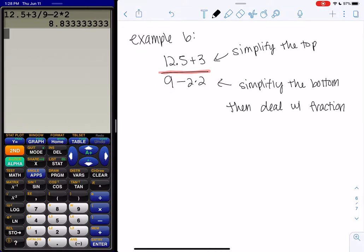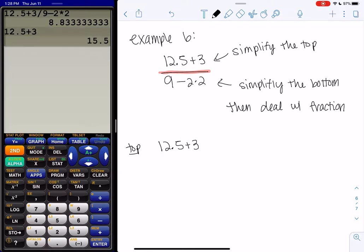So we are going to simplify the top and the bottom separately. The top would be 12.5 plus 3, which is a single operation, so we'll just go ahead and add. On top, we're going to get 15.5.